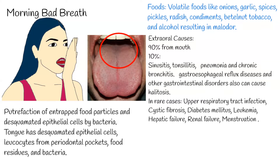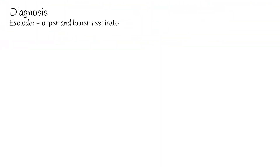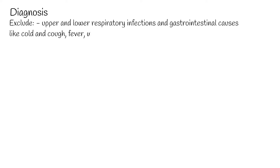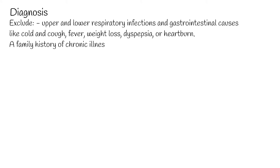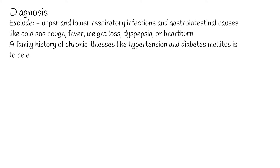The clinician should obtain a history of past and present illnesses, including symptoms suggesting upper and lower respiratory infections and gastrointestinal causes like cold and cough, fever, weight loss, dyspepsia, or heartburn. A family history of chronic illnesses like hypertension and diabetes mellitus should also be elicited.